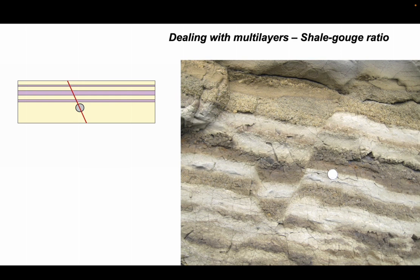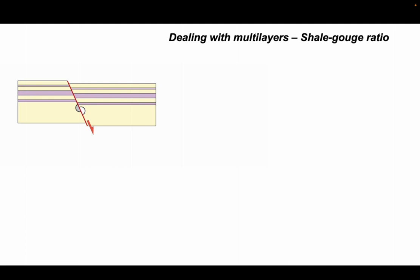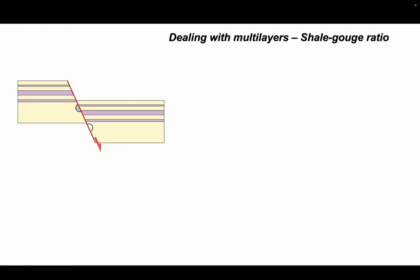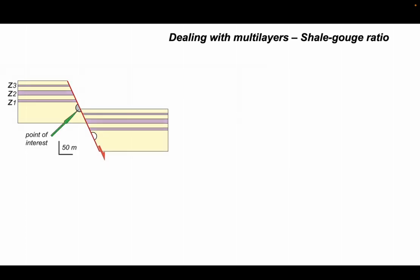Let's see how this might play out. Here is our fault zone splitting apart and the purple shale units moving down across the footwall here, so the fault zone has entrained in this case three distinct shale layers. So let's imagine this point of interest. We've got our three shale layers Z1, Z2, and Z3 that have moved past that point on the fault.